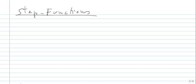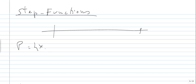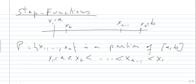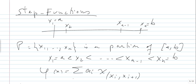These points xᵢ are what we call a partition. A partition P = {x₁, ..., xₙ} of [a,b] satisfies x₁ = a < x₂ < ... < xₙ₋₁ < xₙ = b. Your step function with respect to this partition is written as σ of aᵢ · χ[xᵢ, xᵢ₊₁], summed from i = 1 to n−1.